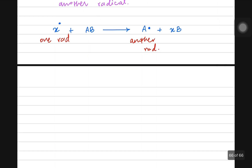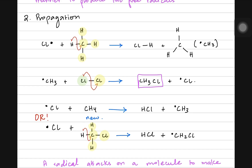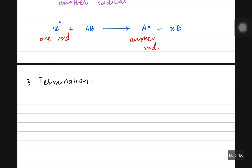The final step is termination. In termination, two radicals combine with each other, both gaining stability, and the reaction stops. Looking at the radicals in the container, one possibility is that one chlorine radical randomly collides with another chlorine radical and they combine to make a stable Cl2 molecule.